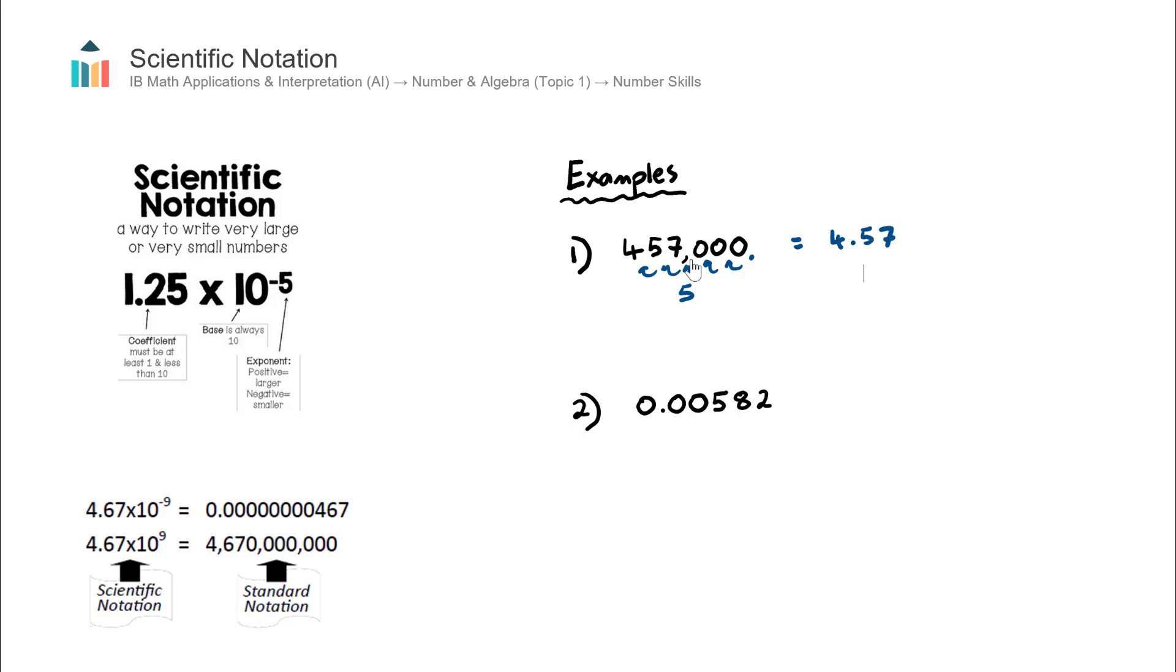I have converted this number into a number between 1 and 10. And the form of scientific notation is always times 10 to the power of, and the power is whatever number I have here, the number of decimal place movements. So the power of 5.